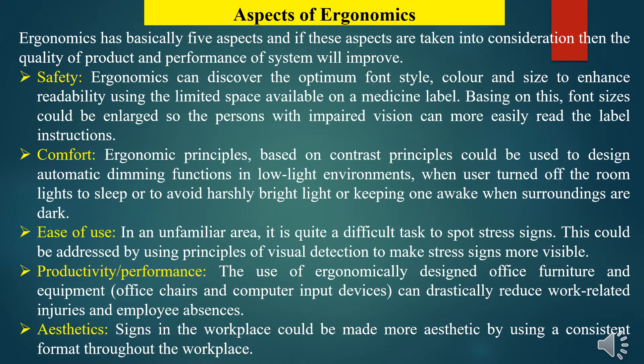Ergonomics has five basic aspects, and if these aspects are taken into consideration, the quality of product and performance of the system will improve. The five basic aspects are: safety, comfort, ease of use, productivity or performance, and aesthetic. Regarding safety, ergonomics can discover the optimum font size, color and size to enhance readability using the limited space available on a medicine label, so that persons with impaired vision can more easily read the instructions. For comfort, ergonomic principles based on contrast could be used to design automatic dimming functions in low light environments.